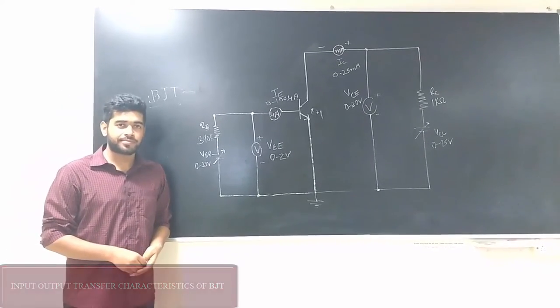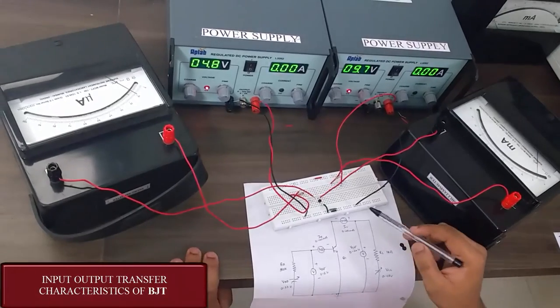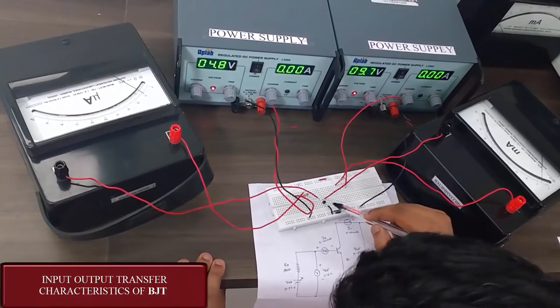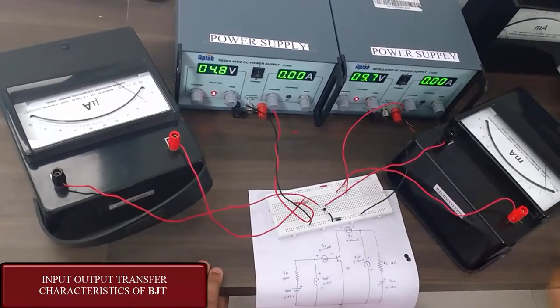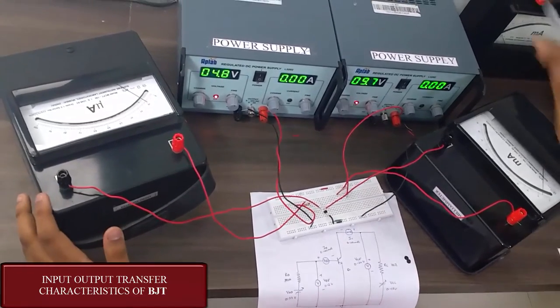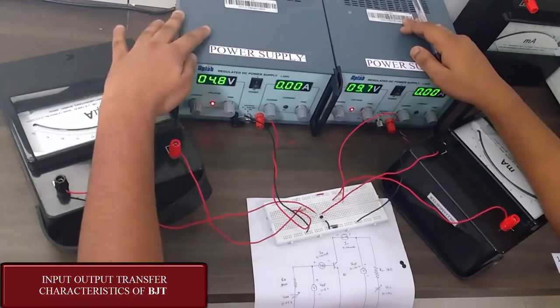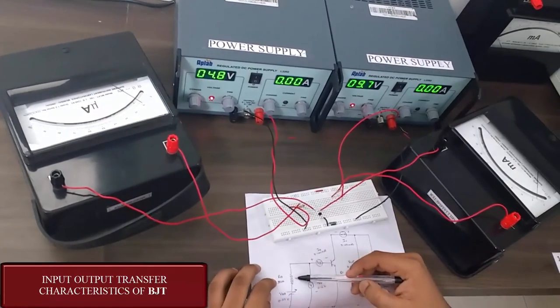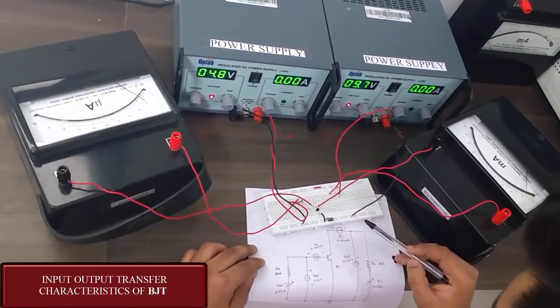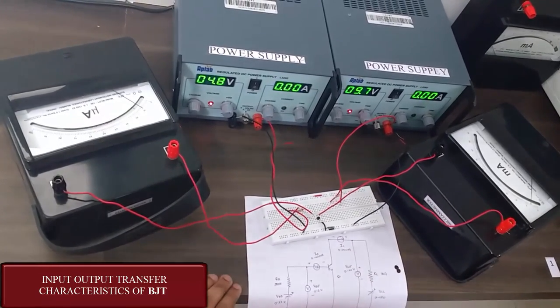Now let us implement on the breadboard. This circuit is implemented on breadboard. The emitter is here, the base is here, and the collector is here. We have given two power supplies: this one is VCC and this one is VBB. The 390K base resistor is here and the collector resistor is here which is 1K.